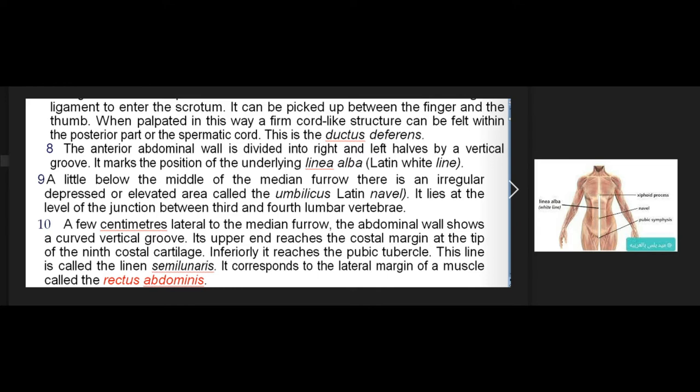This is the ductus deferens. The anterior abdominal wall is divided into right and left halves by a vertical groove, which marks the position of the underlying linea alba. A few centimetres lateral to the median furrow, the abdominal wall shows a curved vertical groove whose upper end reaches the costal margin at the tip of the 9th costal cartilage, and inferiorly it reaches the pubic tubercle. This line is called the linea semilunaris and corresponds to the lateral margin of a muscle called the rectus abdominis.